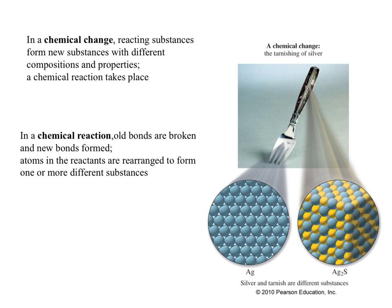So first we just need to define what a chemical change is, and how do we know what's going on in a chemical reaction. Chemical changes involve substances that are being reacted to form new substances — new substances that have different compositions and properties. That's when you know a chemical reaction has taken place.